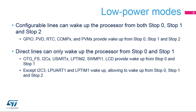Configurable lines provide the capability to wake up from a GPIO rising or falling edge, programmable voltage detector, RTC, comparators, and peripheral voltage monitor. Direct lines can only act as a wake-up source from stop 0 and stop 1 mode, except I2C3, LPUART1, and LPTIM1, which can serve as a wake-up source from stop 2 mode as well.